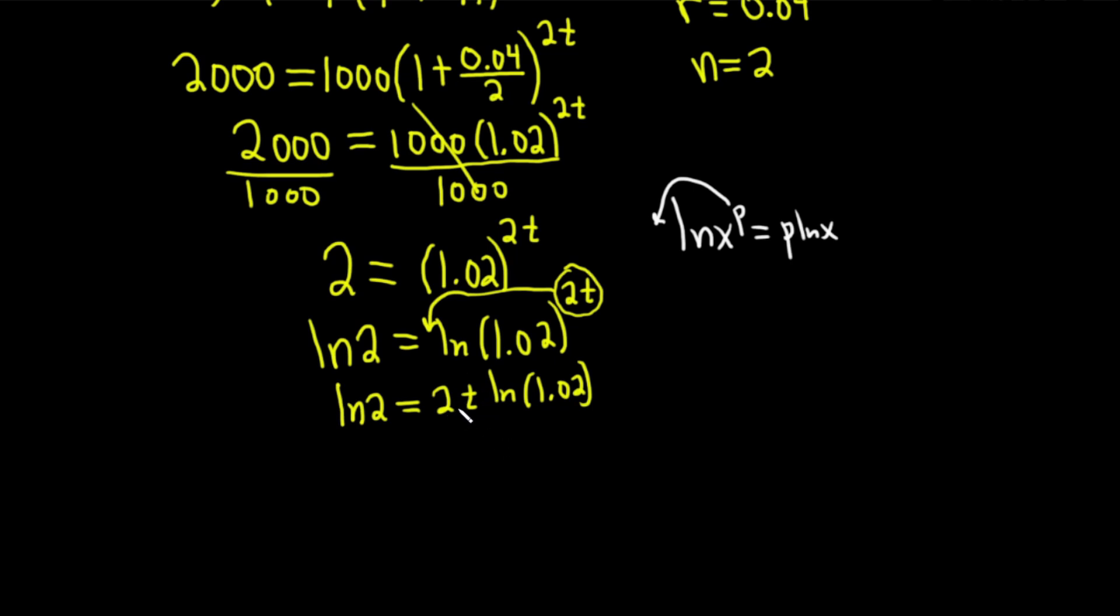We're pretty much done. We just basically have to find T. It's being multiplied by 2 and the natural log of 1.02. So to undo that, we use the inverse operation of multiplication, which is division. I'll put a 2 here and an ln 1.02 here. And then what you do to one side, you do to the other. So 2 ln 1.02. These go away. We have T equal to all of this.